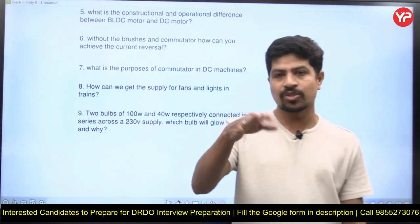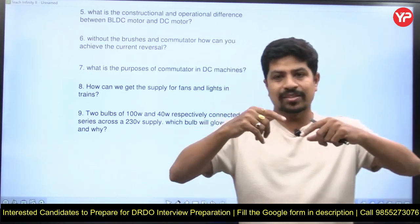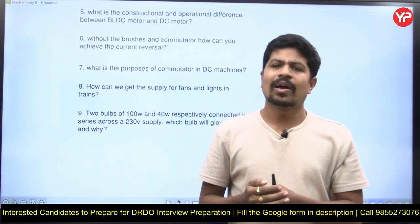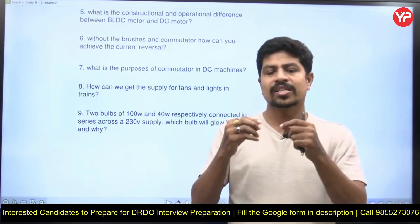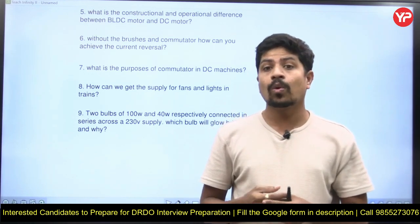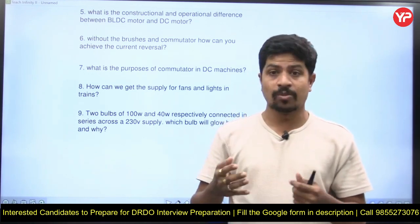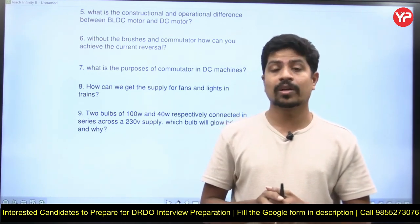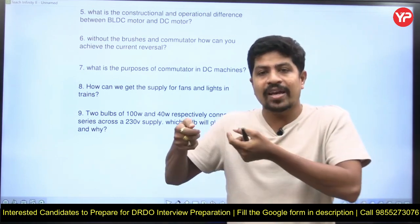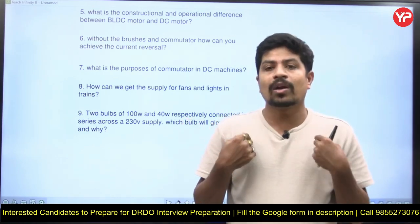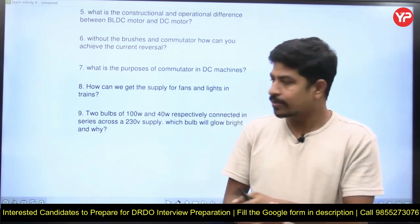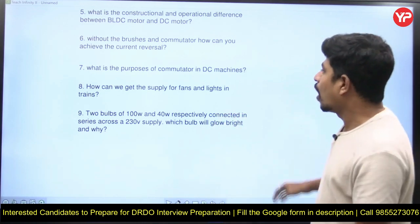The commutator converts AC to DC or DC to AC. In a DC generator, the EMF induced inside the winding is AC; the commutator converts that AC to DC at the output. In a DC motor, we give a DC supply and the commutator converts that DC to AC for the internal winding — so in a motor, the commutator performs the reverse operation compared to a generator.